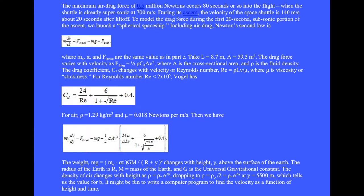The maximum air drag force of one half million newtons occurs 80 seconds or so into the flight when the shuttle is already supersonic at 700 meters per second. The thrust was 35 million newtons and the air drag is just one half million newtons. To model the drag force during the first 20 second subsonic portion of the ascent, we launch a spherically shaped spaceship.